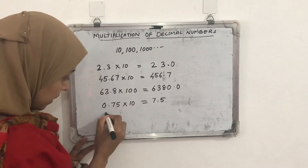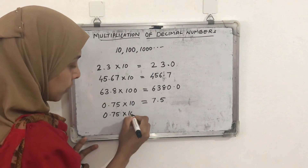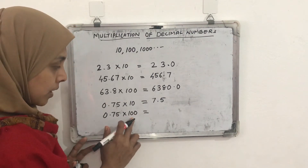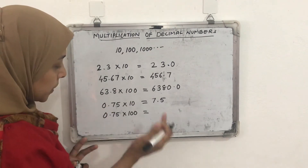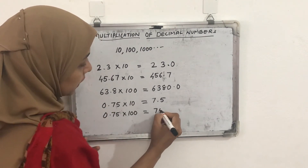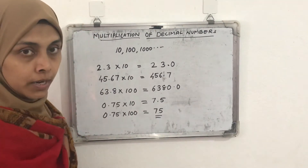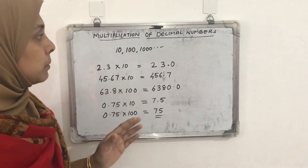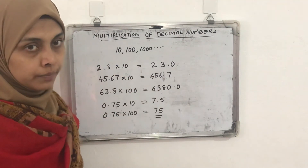Now if we multiply the same number 0.75 by 100, what will happen? 100 has two zeros, so we move two places to the right. The answer will be 75, or written as 75.0. This is the first rule for multiplication of decimals — multiplying by 10, 100, or 1000. Clear?